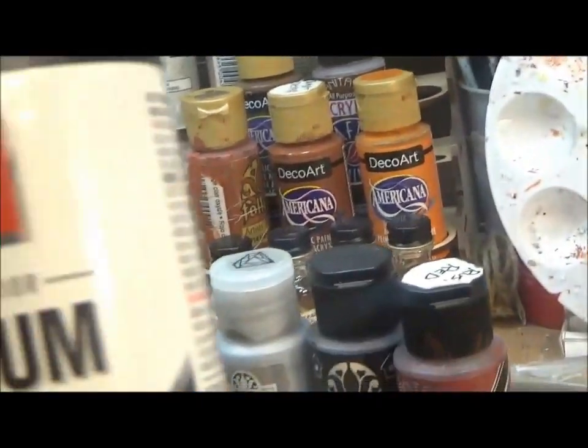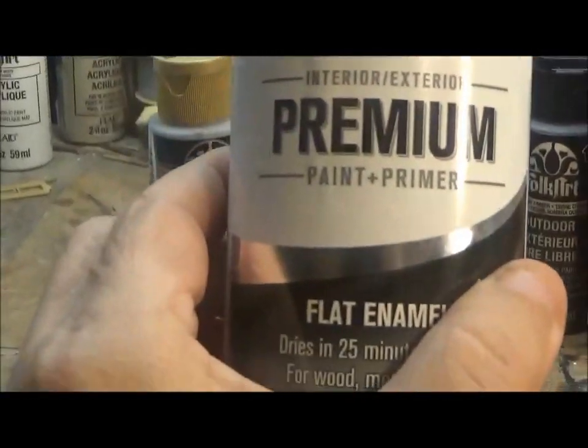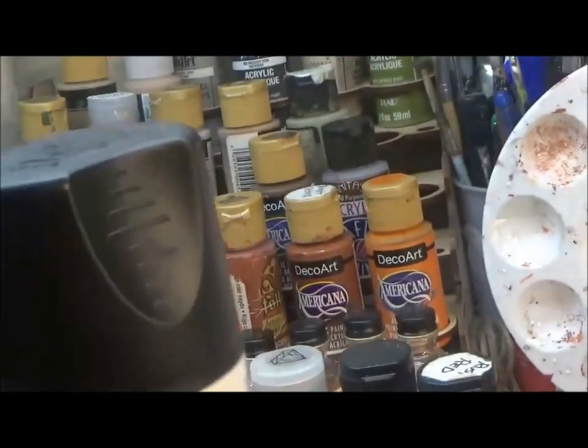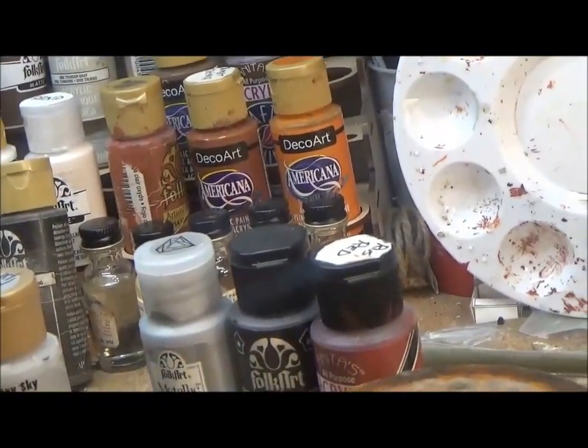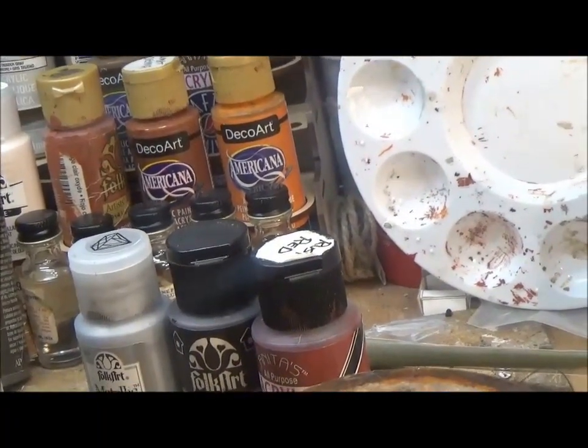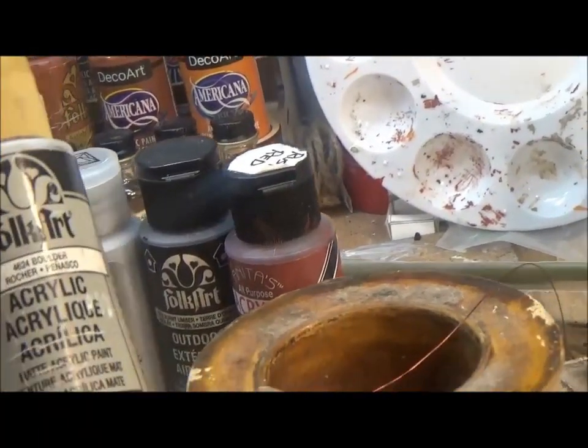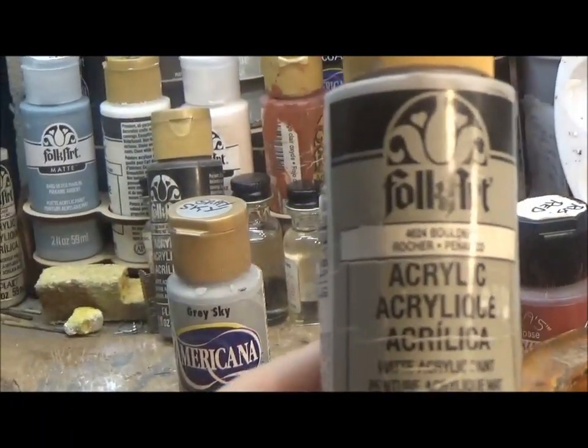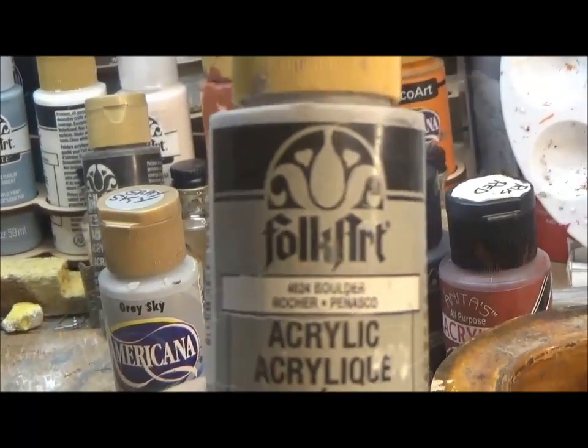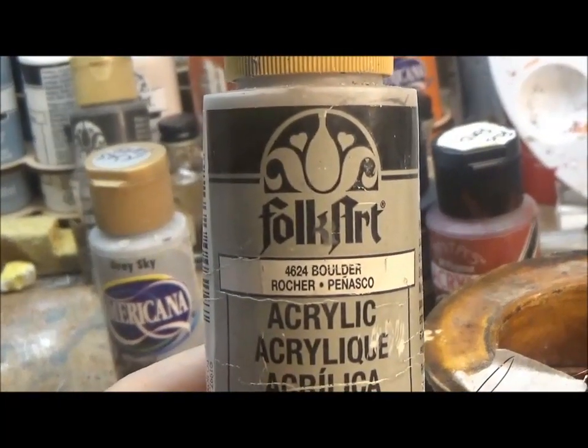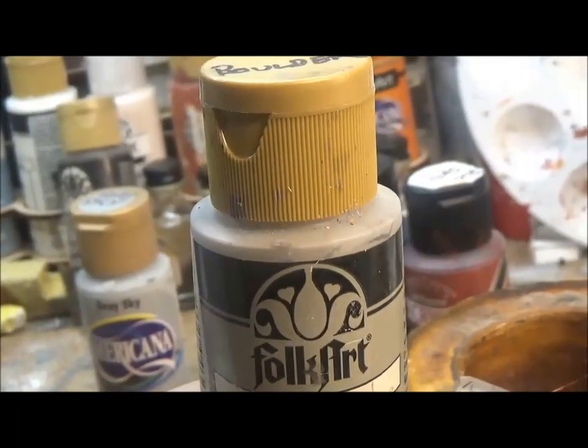I'm going to be using black spray paint first, and I'll just spray paint it lightly with black. Once that dries, I'm going to be using folk art boulder, and that I'm going to paint over the wooden parts of the pole.